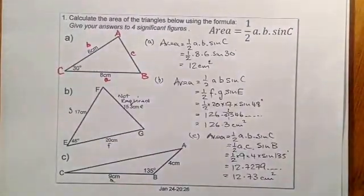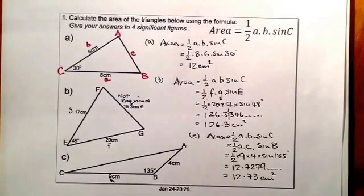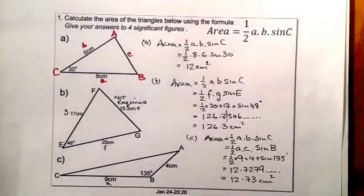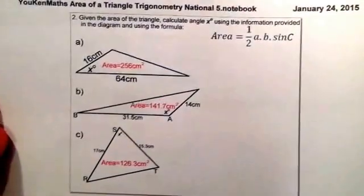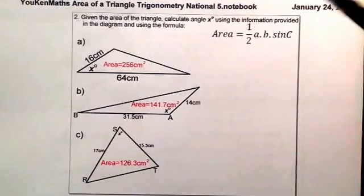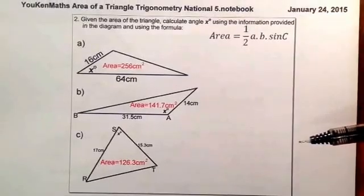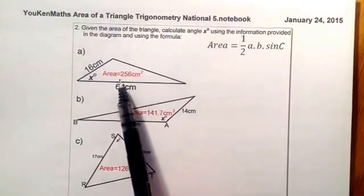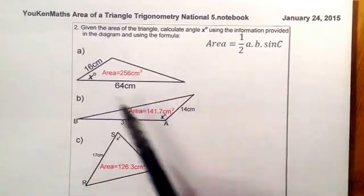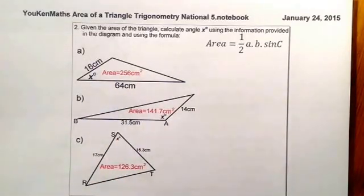That's the first type of calculation. You'll find lots of questions like this in a textbook or from your teacher. Let's now look at when we're given the area and try to calculate backwards. Here are three more questions. Remember the formula from the formula list. This time I'm given the area — for the first triangle the area is 256, and I've been given two sides beside the angle, and I'm going to try to calculate the angle x.